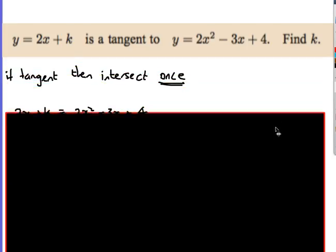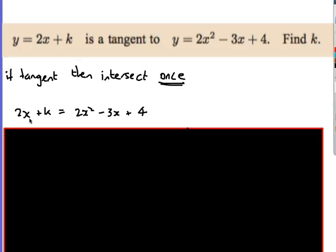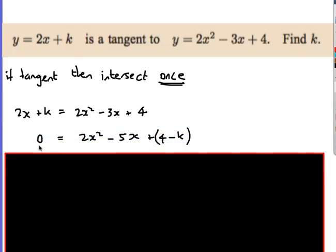Now, the first thing we do is say, well, they're going to intersect. So we just put them equal to each other. So 2x plus k is equal to 2x squared minus 3x plus 4. And we do what we normally do when we get this sort of position, which is we make it into a quadratic equal to 0. So there we go. I just rearranged everything. Make it equal to 0. And I've just brought everything to one side.